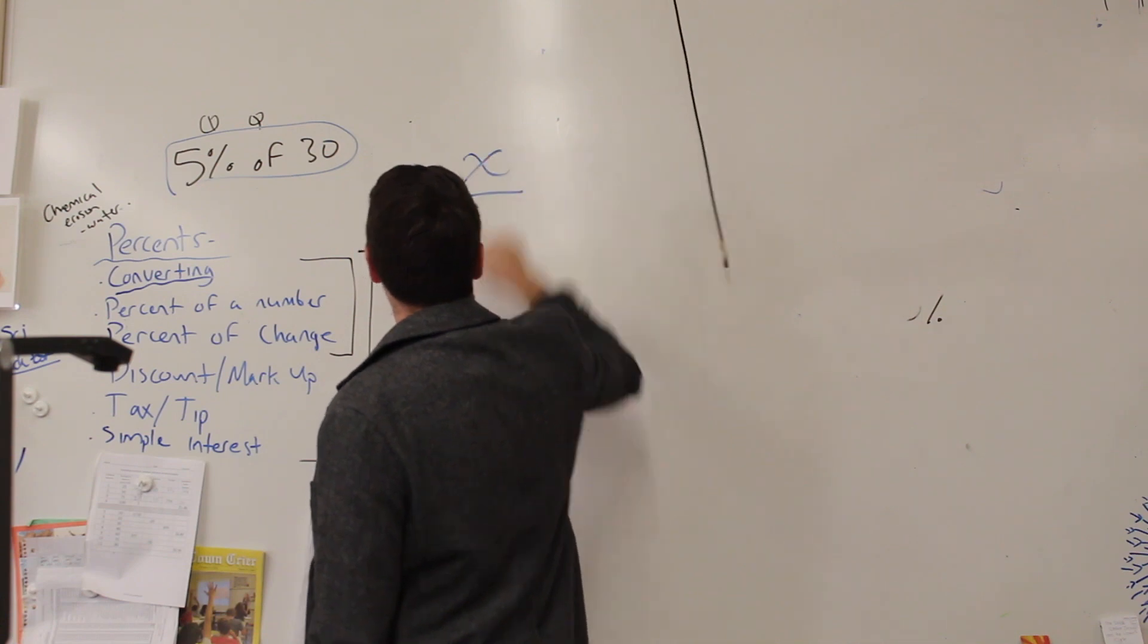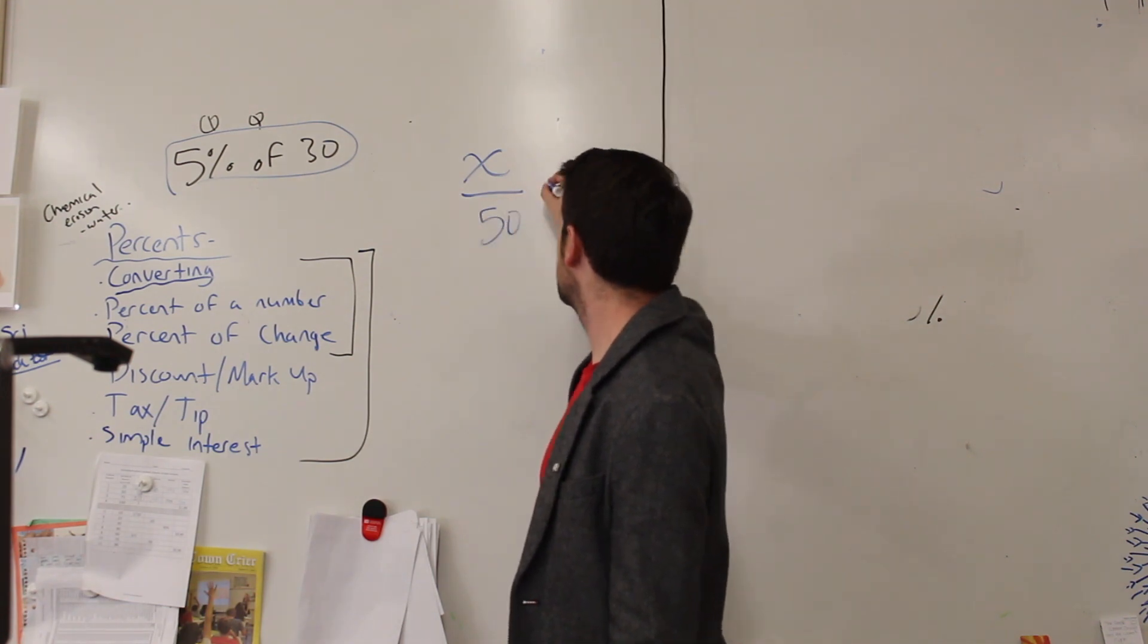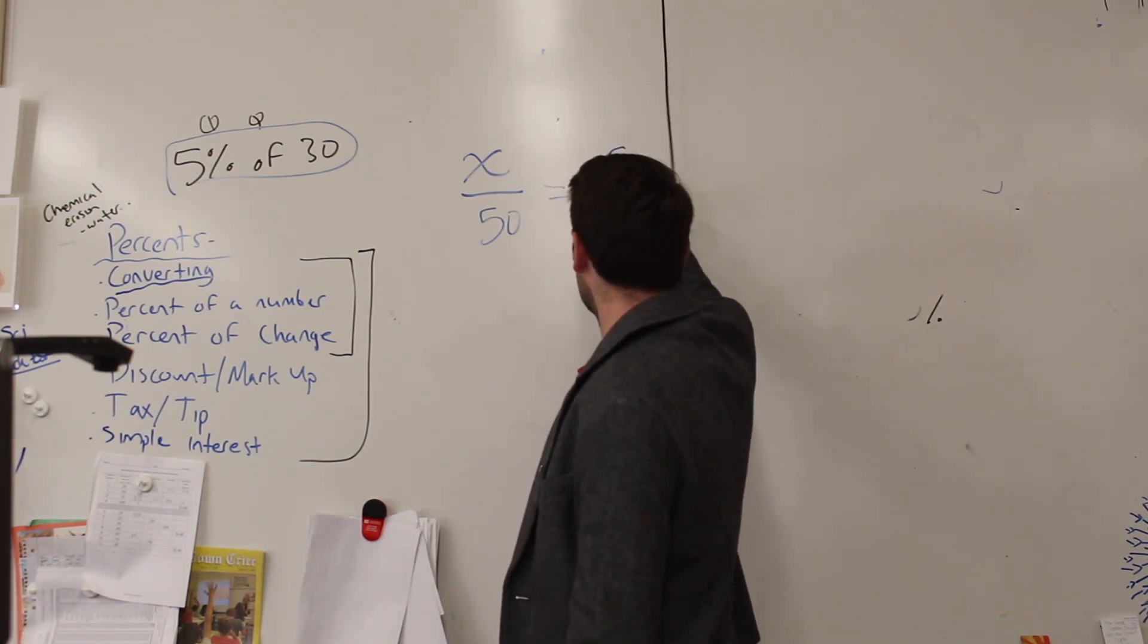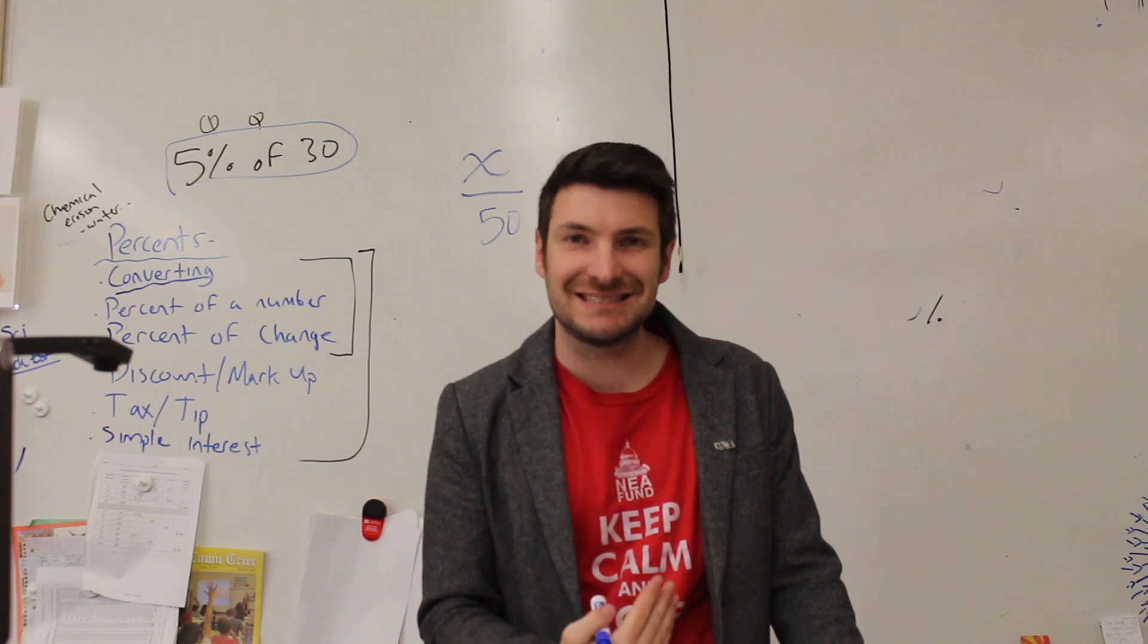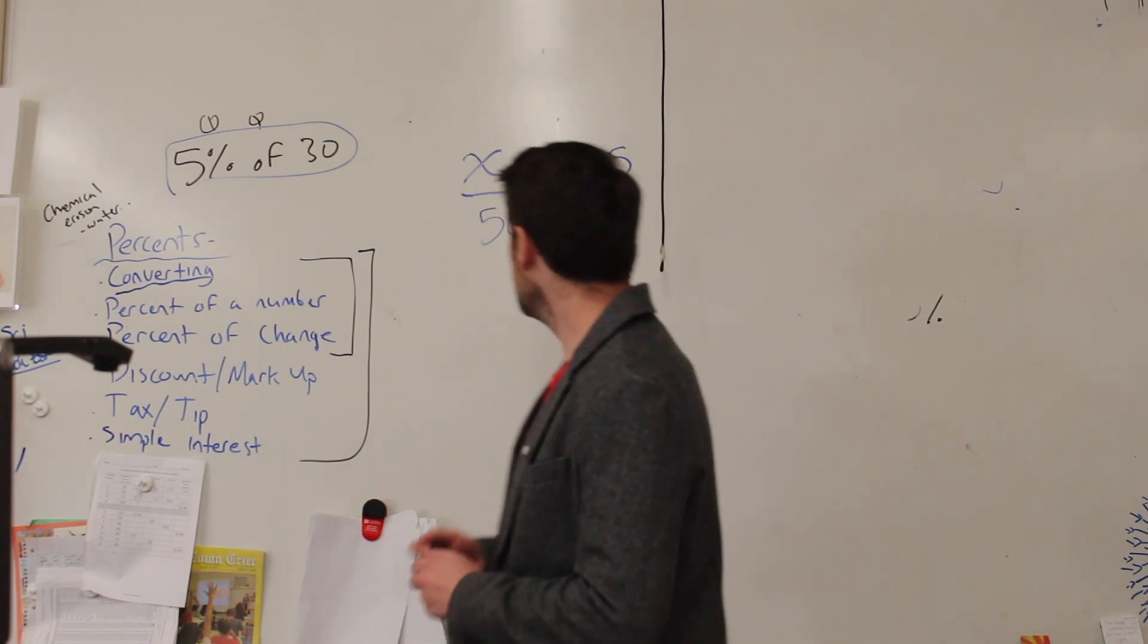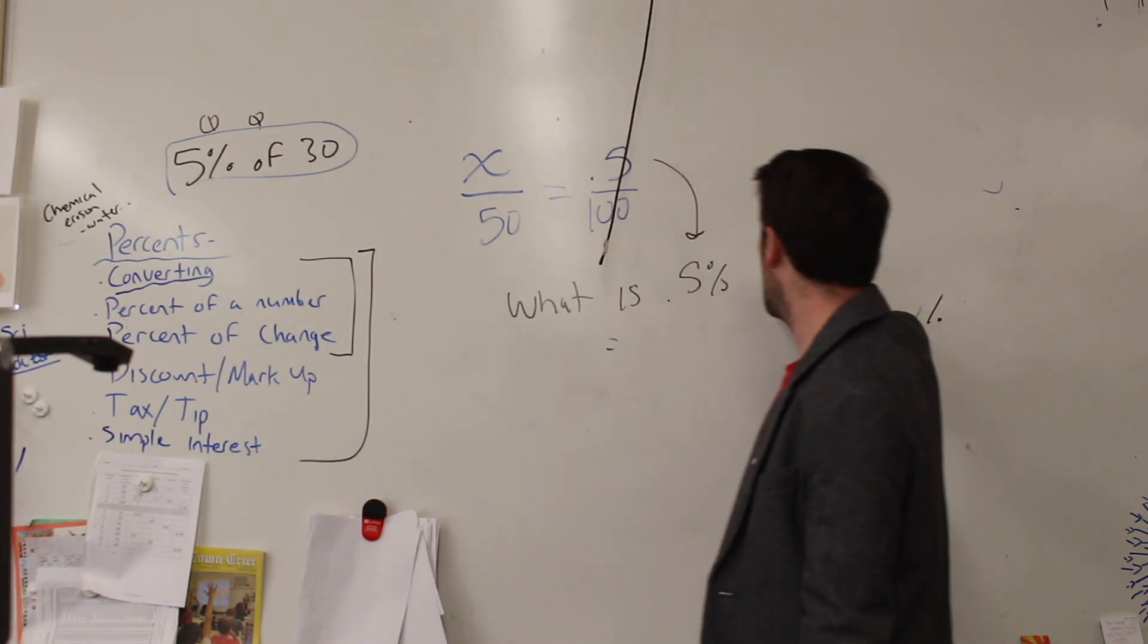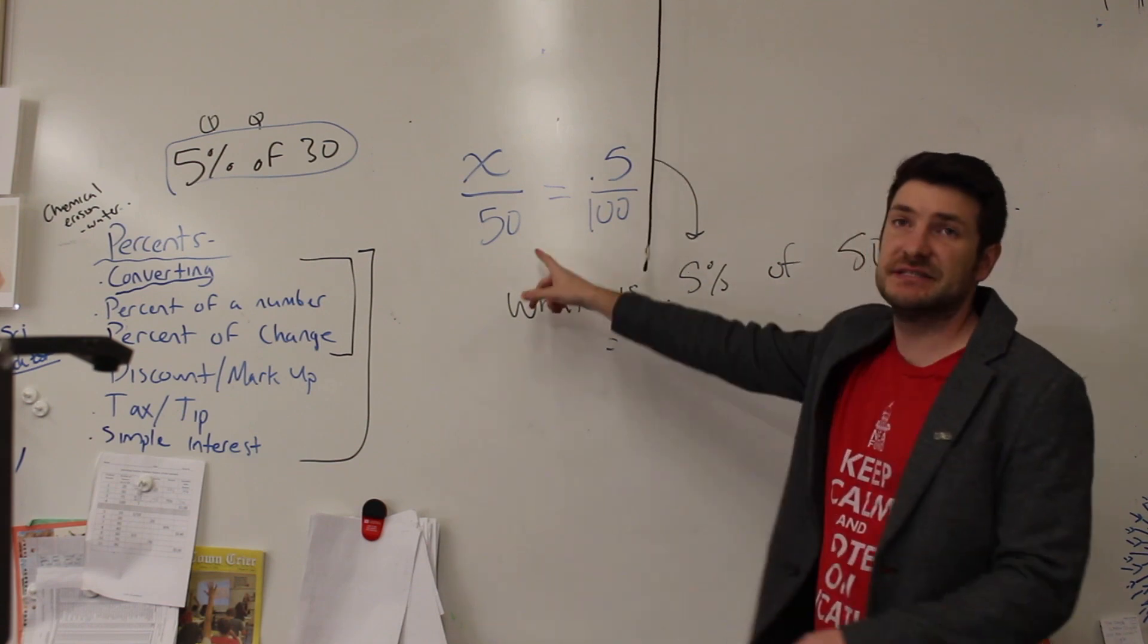So that's percent but I want to look at if we don't know the part. x over 50 equals, sorry not 10, 0.5 over 100. That's right. Okay. So what this problem is asking us is, I'll write this out in words very carefully. What is 0.5% of 50? Because 50 is our whole. So that's what this problem starts as and this is how we can set it up.